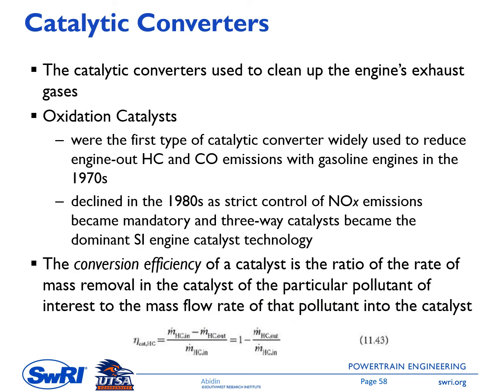Catalytic converters were used to clean up engine exhaust gases until around 1970, when new regulations came to strictly control NOx emissions. Then the three-way catalyst became the dominant spark ignition engine catalyst technology. There is one parameter used to quantify catalyst performance called conversion efficiency — the ratio of the rate of mass removal of a particular pollutant in the catalyst to the mass flow rate of that pollutant into the catalyst. This is equation 11.43.